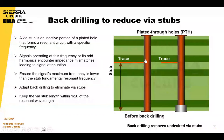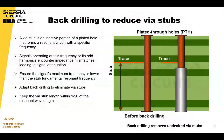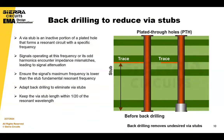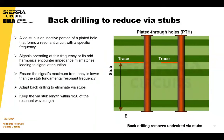Back drilling is a technique that can reduce your VIA stubs. A VIA stub is an inactive portion of a VIA that forms a resonant circuit with a specific frequency. Signals operating at this frequency or its odd harmonics encounter impedance mismatches, leading to signal attenuation. To prevent signal attenuation caused by VIA stub resonance, ensure the signal's maximum frequency is significantly lower than the stub's resonant frequency. One effective way to eliminate VIA stubs is back drilling.